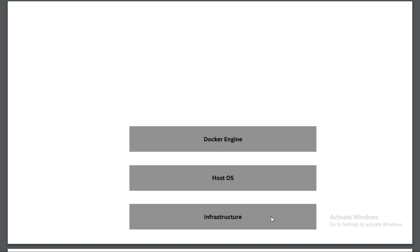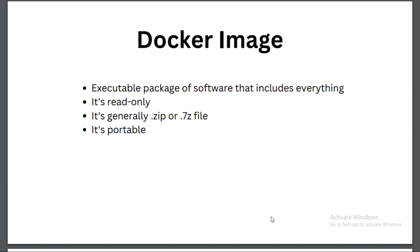Once those three things are ready, Docker images come into the picture. The first important property of a Docker image is that it is an executable package of software that includes everything — dependencies like Node.js, your code, system tools, system libraries, and settings needed for your project to run.